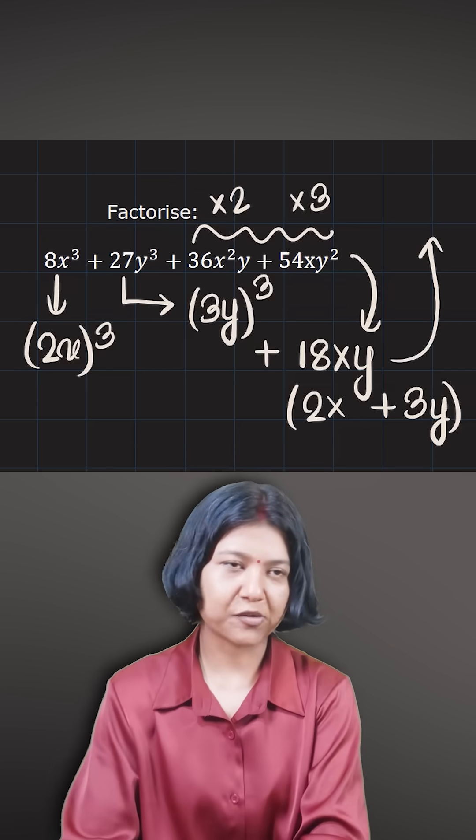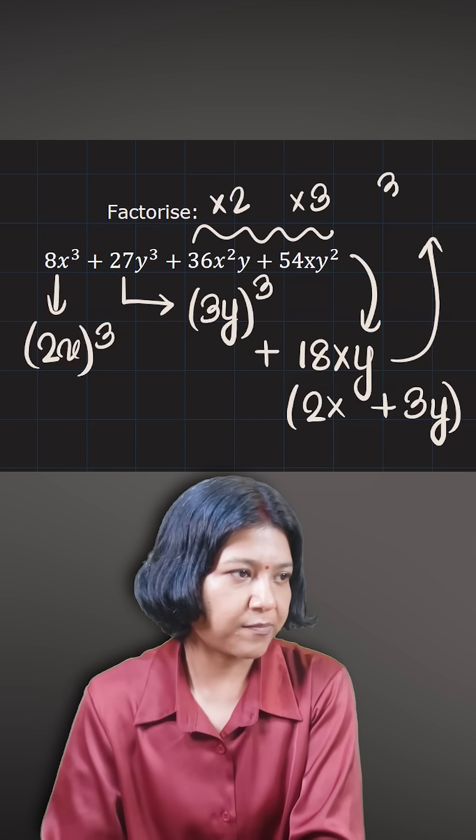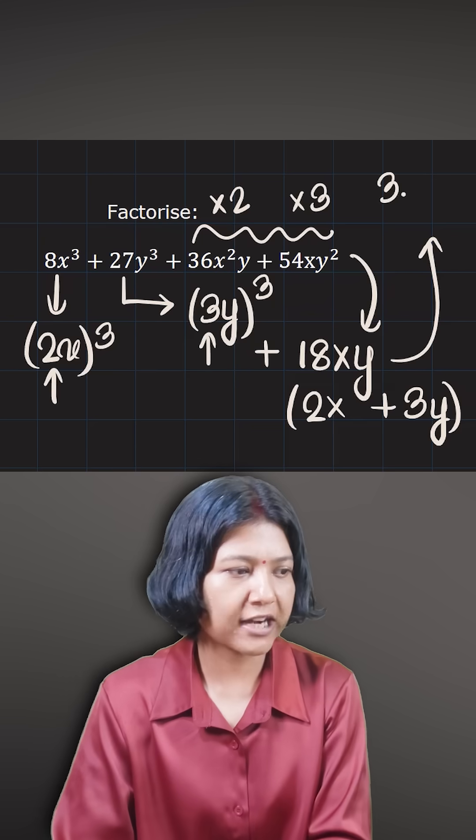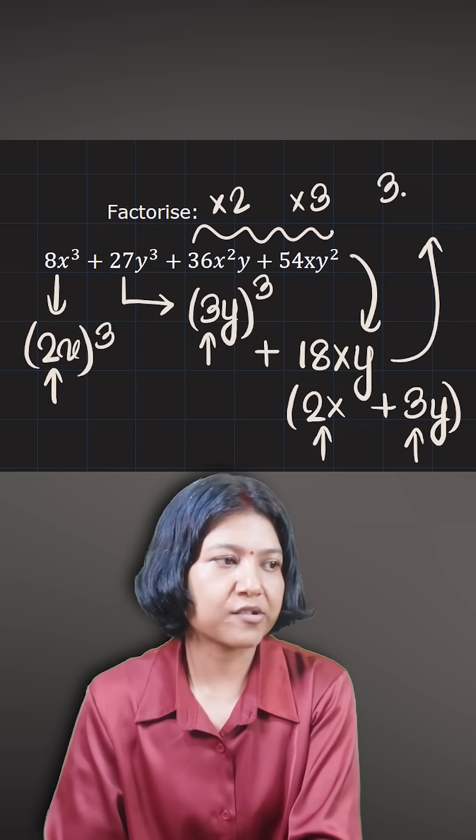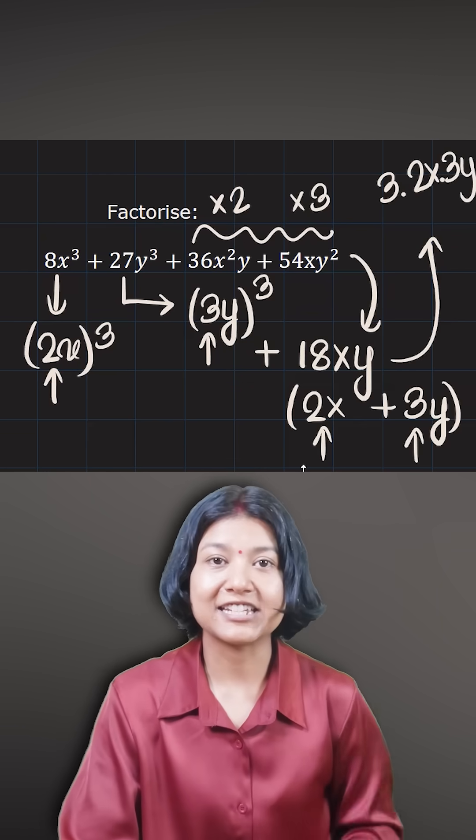Now if you look at this term 18xy, I can represent 18xy as three times the product of the two terms we got: 2x and 3y. Note that we got the same two terms here. So 3 times 2x times 3y is the other way I could represent 18xy.